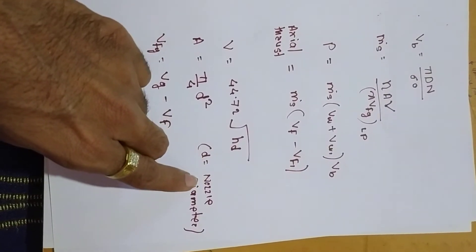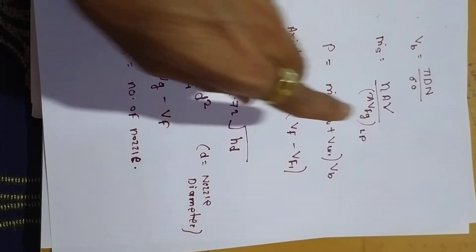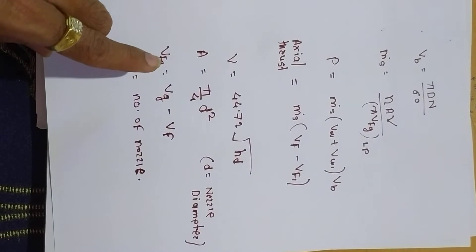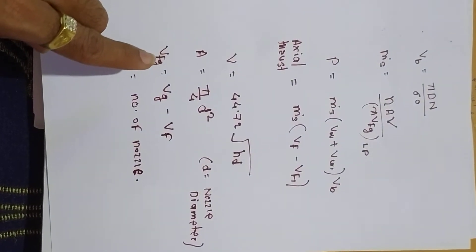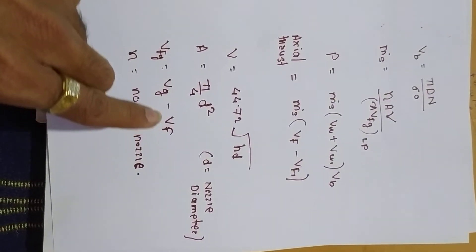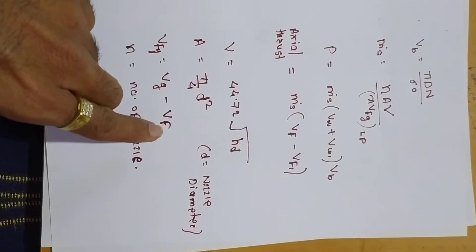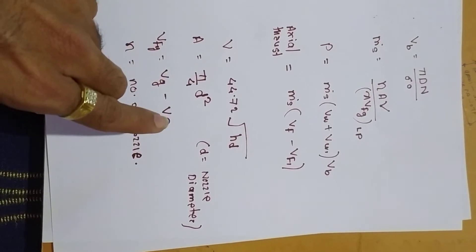Area of nozzle is pi by 4 D squared, where D is the nozzle diameter. Now VFG is the specific volume of wet steam: VG minus VF. The values of VG and VF are taken at low pressure from the steam table.